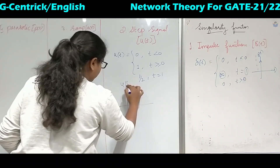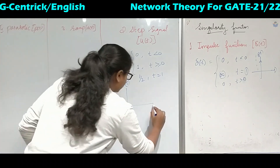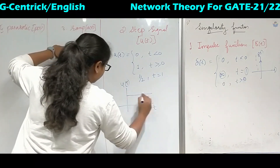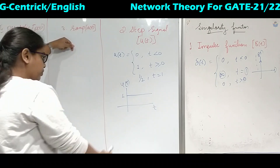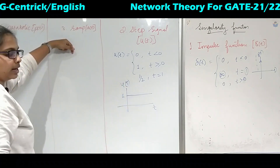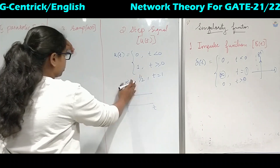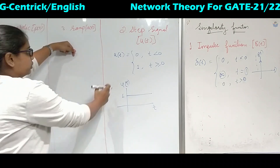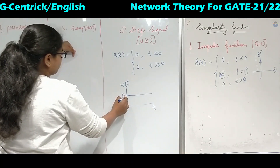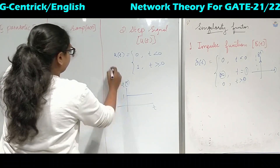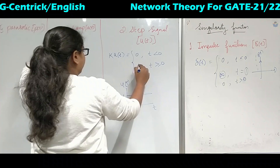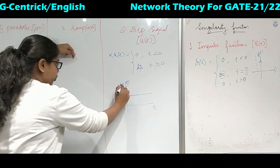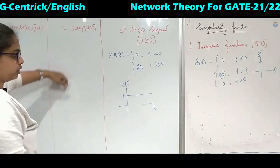For the graph: if the y-axis represents the unit step function and this is the time axis, then for t less than 0 it is 0, and 1 for t greater than or equal to 0. At t equal to 0 it will be half, but we will not denote it in most cases. If the coefficient is something other than 1 — say 2 or 3 — then it will be k times u of t, and the magnitude on the y-axis will be k.